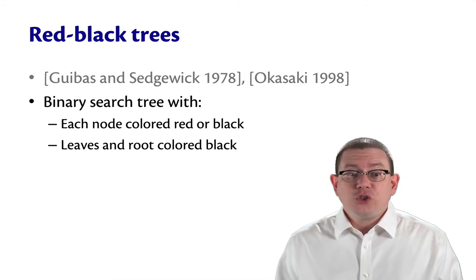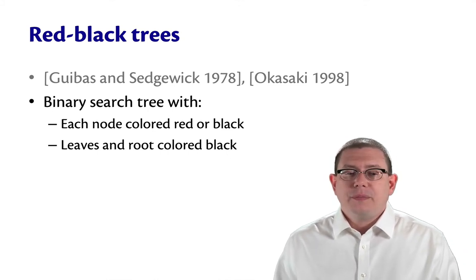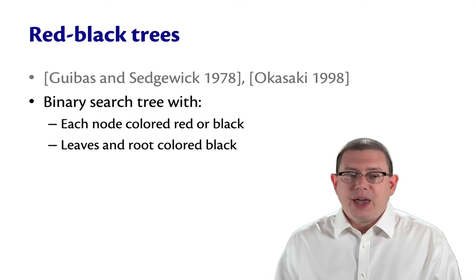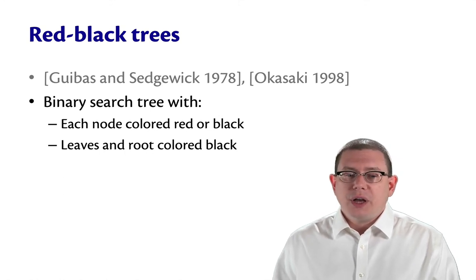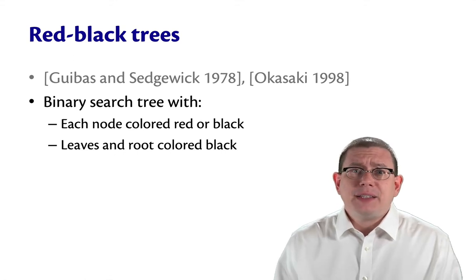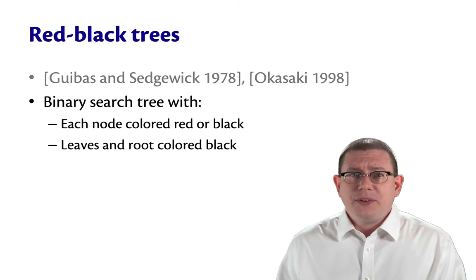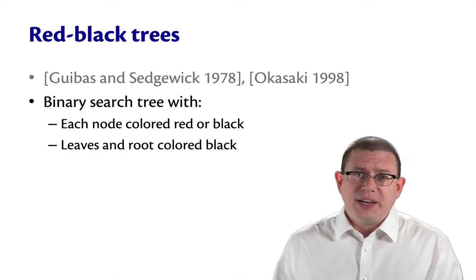In a red-black tree, first off, you have a binary search tree. But, in addition to that, every node is colored, either red or black. Why those two colors? It vexes me because I happen to be red-green colorblind. I don't see red very well at all. It mostly just looks gray to me.